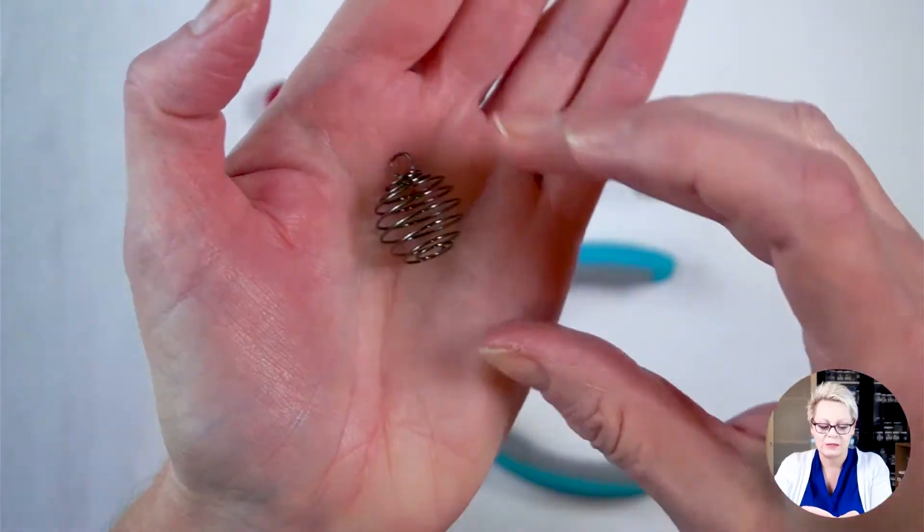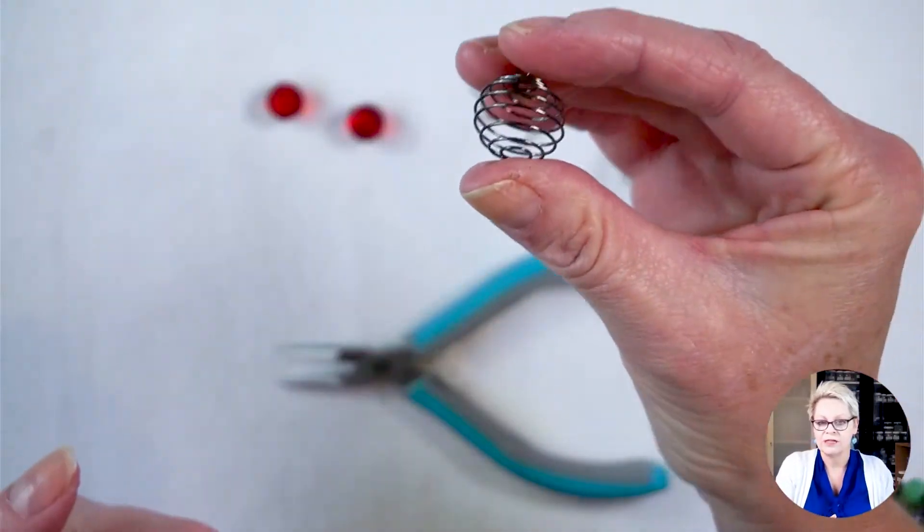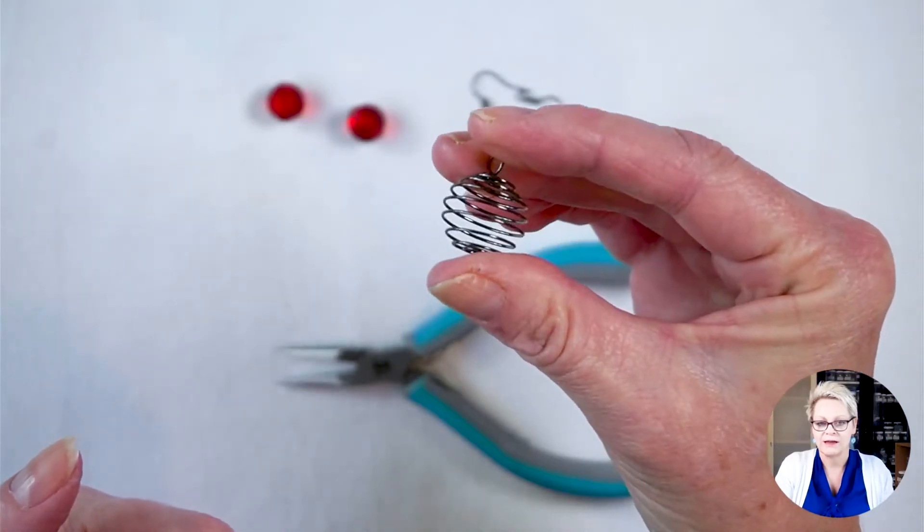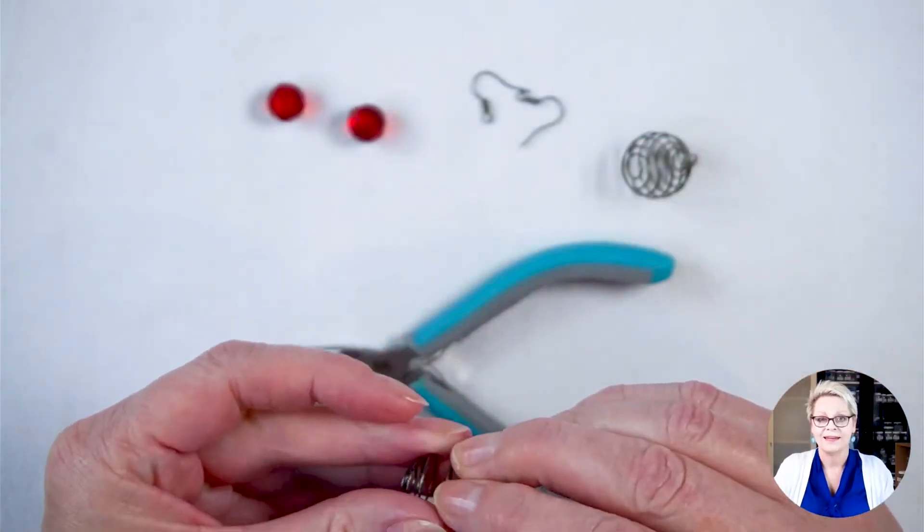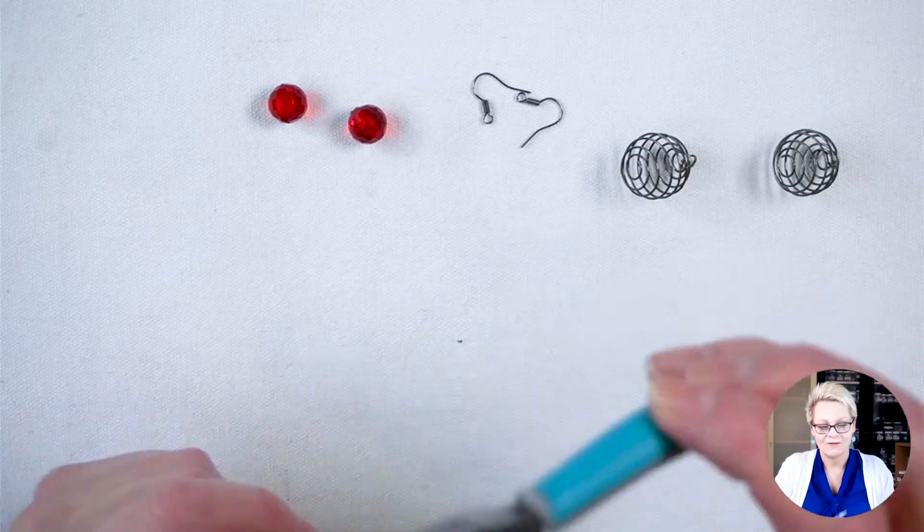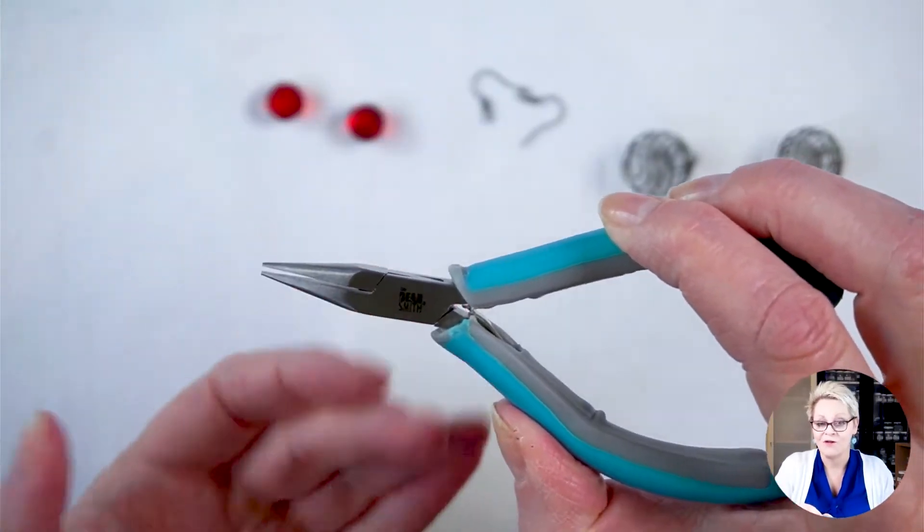They're called spring cage beads because they are literally like a spring. They just kind of close up and down like that. Okay, let's do this. I've got a pair of chain nose pliers and that's the only tool I'll need.